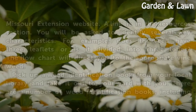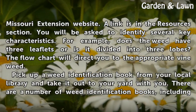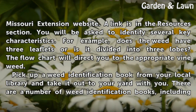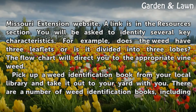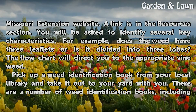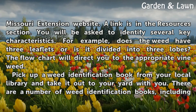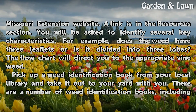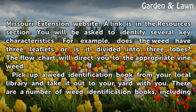Use the flowchart found at the University of Missouri Extension website — a link is in the Resources section. You will be asked to identify several key characteristics. For example, does the weed have three leaflets or is it divided into three lobes? The flowchart will direct you to the appropriate vine weed.